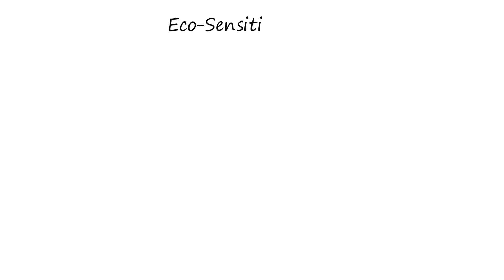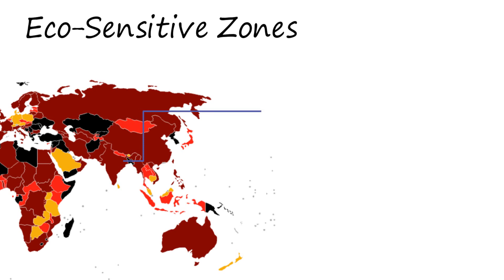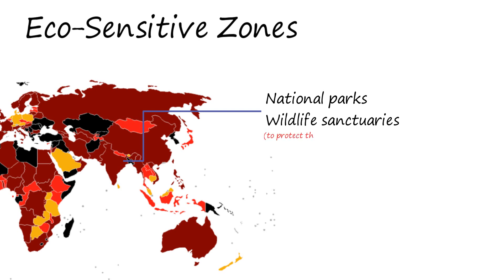In this video, we are going to learn about eco-sensitive zones. In India as well as around the world, the government has protected certain areas which are essential for biodiversity conservation. You can see the places on this world map. These places consist of national parks and wildlife sanctuaries. The idea is to protect the threatened and endangered species and their habitat ecosystem from hunters and other human activities.